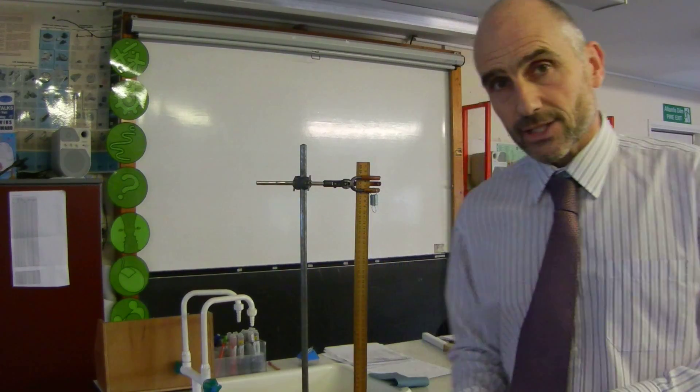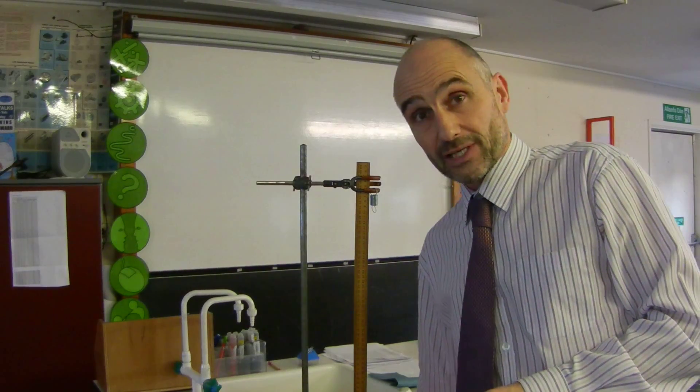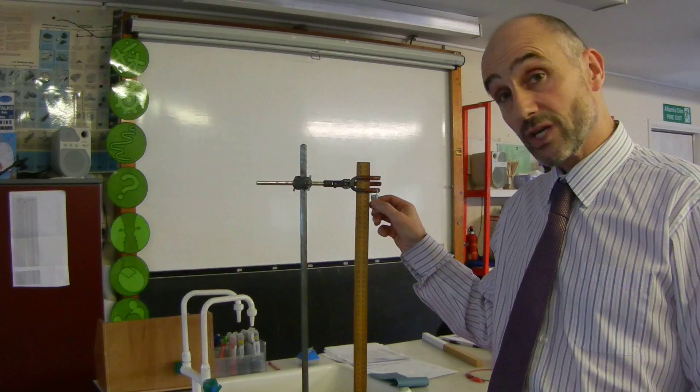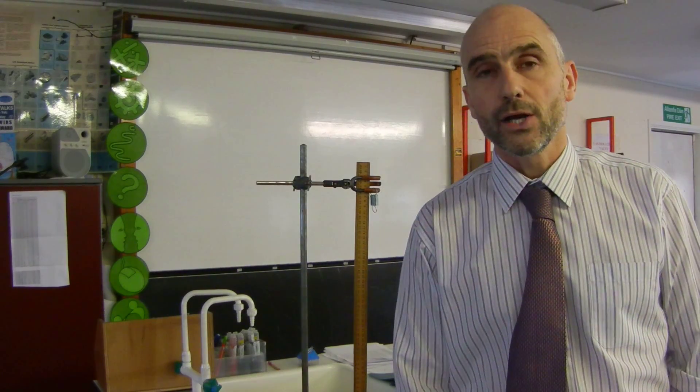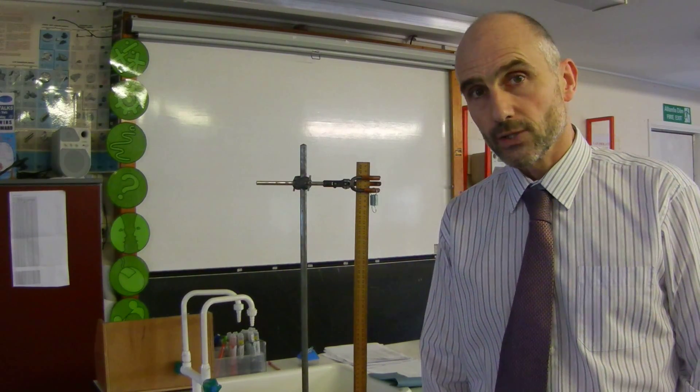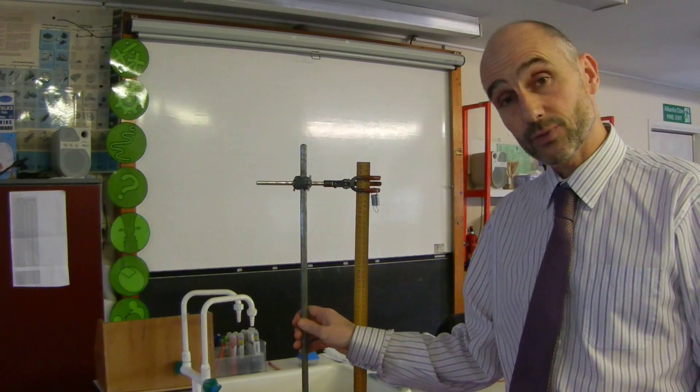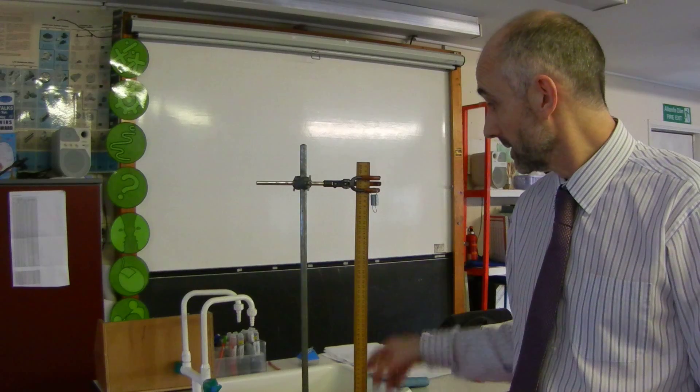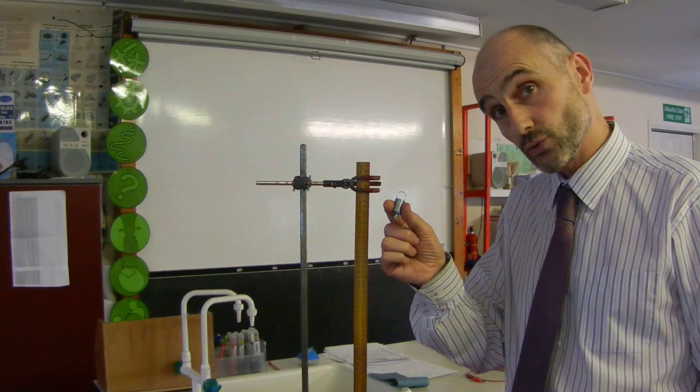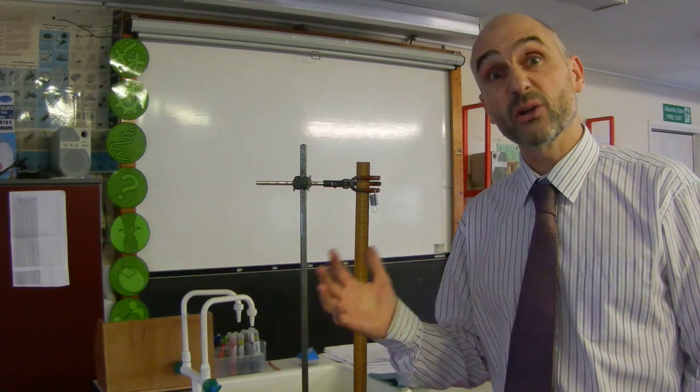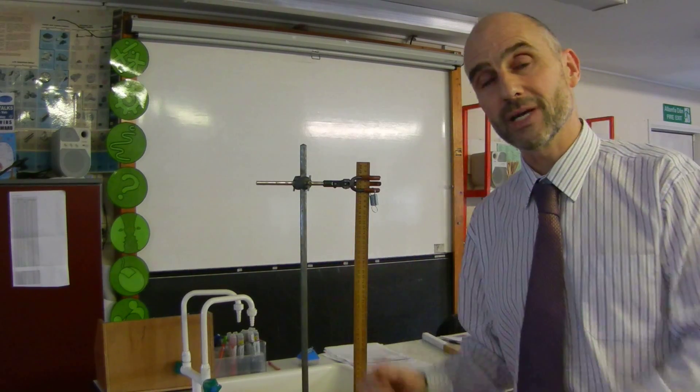What you're going to do today is carry out a short and fairly simple investigation into seeing how a spring changes its shape as you apply a different force. To do that, you're going to need the following equipment: a clamp and stand, half-metre rule, and here's your spring. I'm just going to zoom in a little bit and I'll disappear from picture. You'll just see my hands.